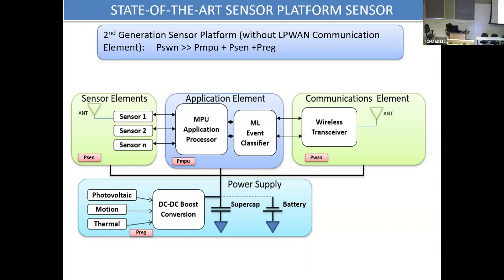The power supply approach is novel: photovoltaic, motion, and thermal harvesting. The highest energy density today is photovoltaic. Sensors using photovoltaics in IoT architectures with low power communication elements typically operate on sub-two-inch photovoltaic cells — usable indoors under very low light. These tiny cells can continuously power the sensor platform and transmit information.